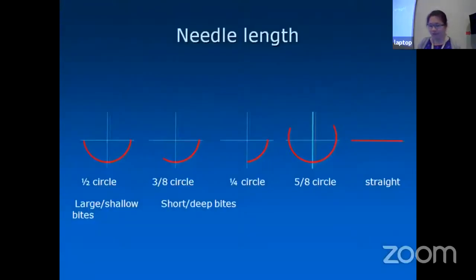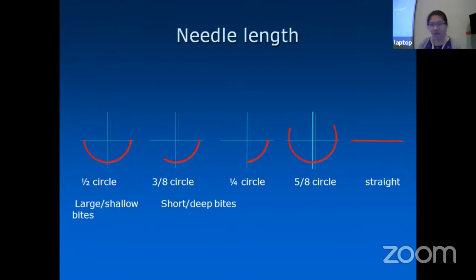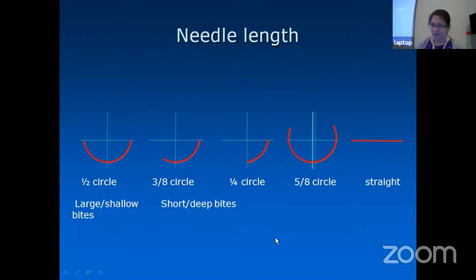First of all, the needle length. There are many different types of needle length, but it is circular — except we also have straight. It can be one-half circle, three-eighths, or one-quarter. The half-circle one is for large or shallow bite, but the three-eighth circle is for short and deep bite.